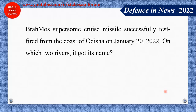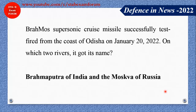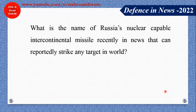BrahMos, which is a supersonic cruise missile, was successfully test-fired from Odisha on January 20, 2022. On which two rivers did it get its name? BrahMos is a very important missile — it has all three versions. It got its name from two rivers: the Brahmaputra river of India and the Moskva river of Russia.